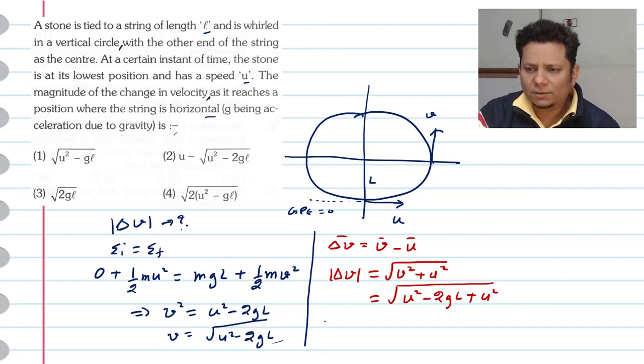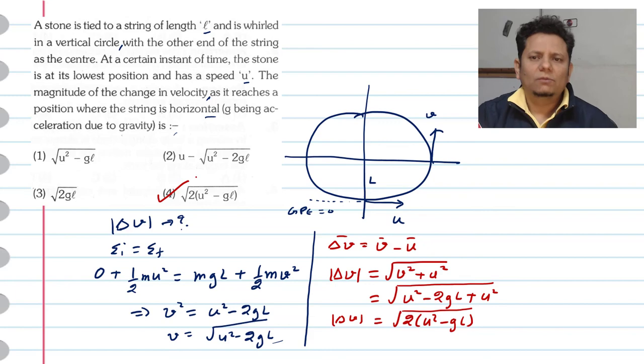So delta V, the magnitude of delta V, is the final magnitude of the answer. This equals square root of 2U squared minus 2gL. This is our final answer.